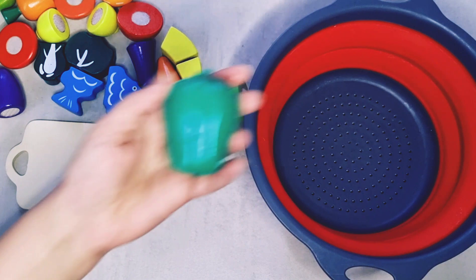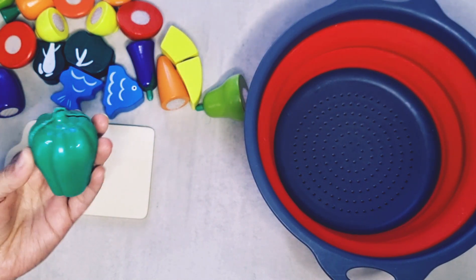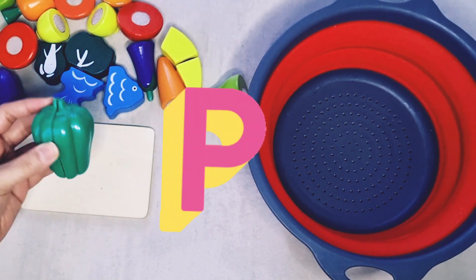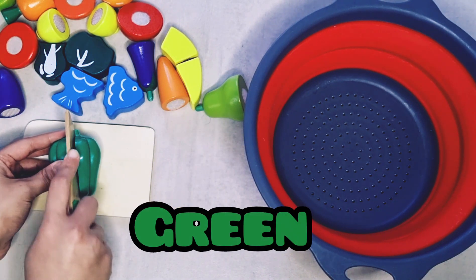Last one is a green pepper. Pepper starts with the letter P and it's green in color. Let's cut the pepper.